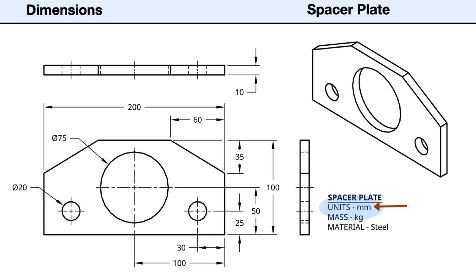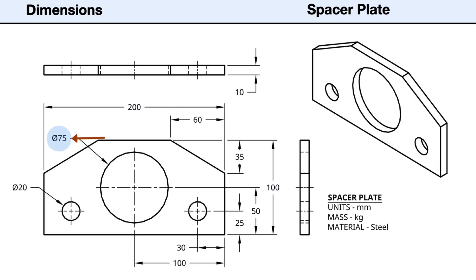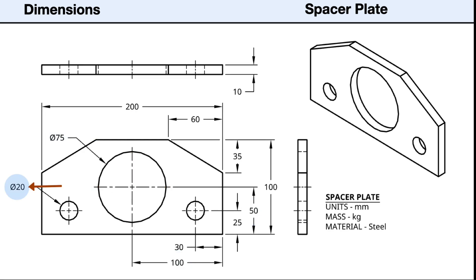First, the measurement units are in millimeters. The material thickness is 10 millimeters. The front view shows the length is 200 millimeters and the height is 100 millimeters. The large hole has a diameter of 75 millimeters and is centered on the plate. The smaller holes have a diameter of 20 millimeters.